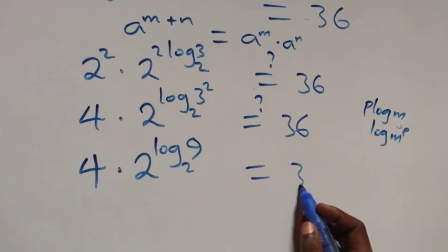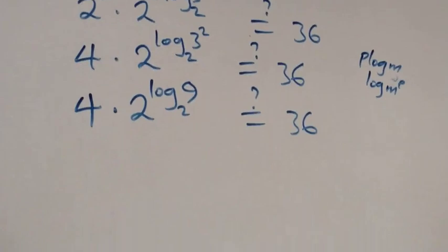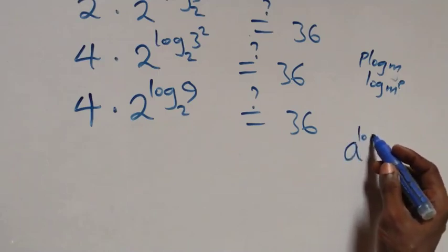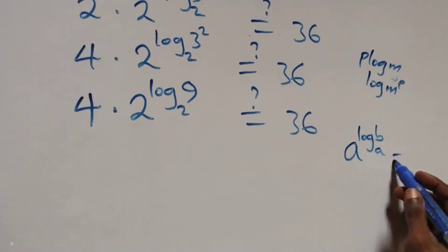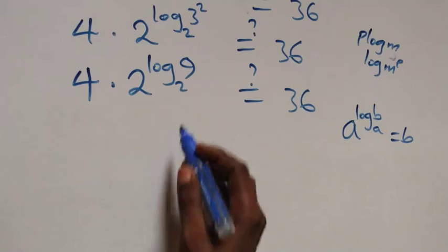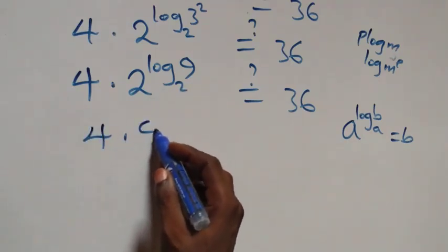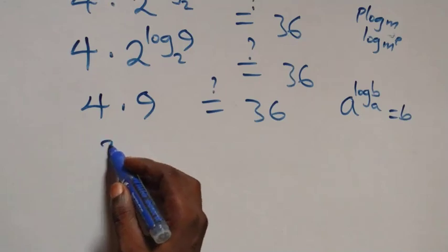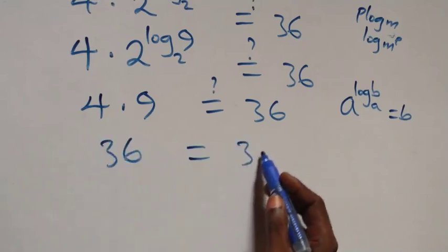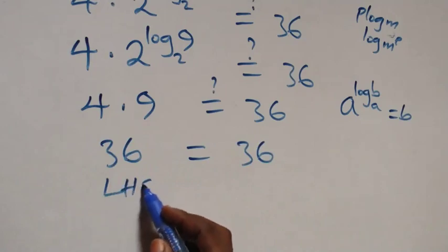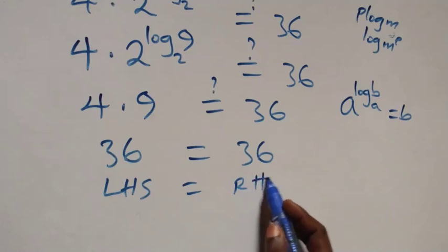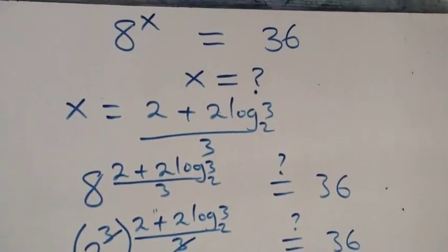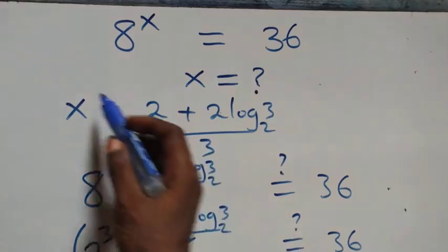This follows from the law of logarithm: a raised to power log b to base a equals b. This implies 2 raised to power log 3 squared base 2 is the same as 9. So we have 4 times 9 equals 36, and of course 4 times 9 gives us 36, which equals 36 on the right hand side. The left hand side equals the right hand side, hence x equals (2 plus 2 log 3 to base 2) over 3 satisfies this given problem.